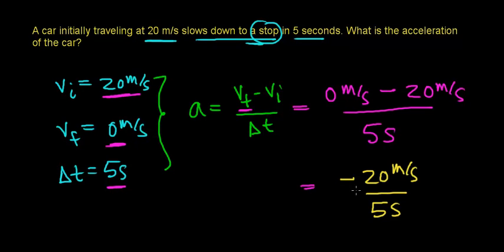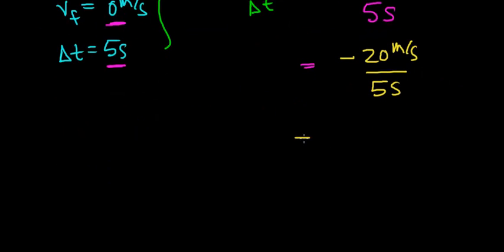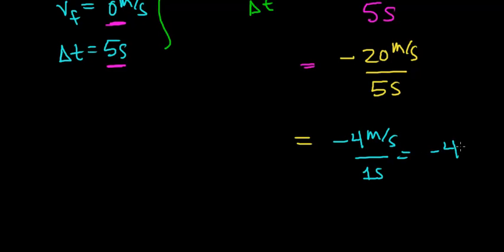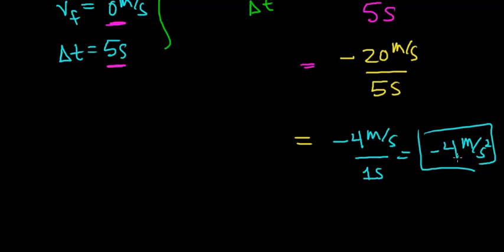Notice the negative sign in front of the 20 meters per second. This works out to be negative 20 divided by 5, which equals negative 4 meters per second per second, or negative 4 meters per second squared. This means the velocity of the car is changing by 4 meters per second every single second.